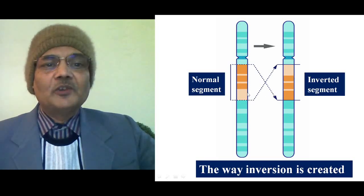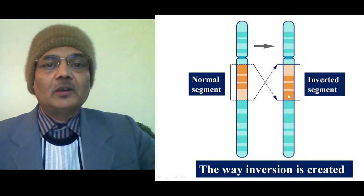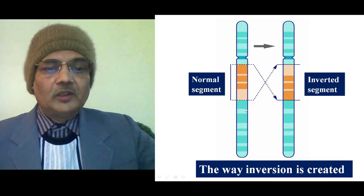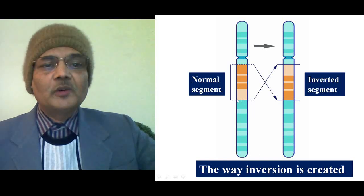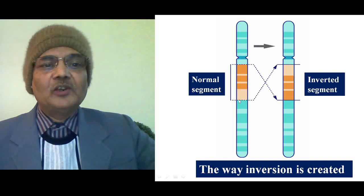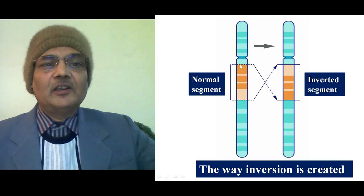In the inverted chromosome, we observe that the light area is now on the upper side, followed by two colored bands which are narrower, and then the broader dark band — showing complete inversion or rotation of this segment, so the gene order gets inverted. For creation of an inversion, two breaks must take place, the broken segment must be inverted 180 degrees, and rejoining must occur. These three events are required.